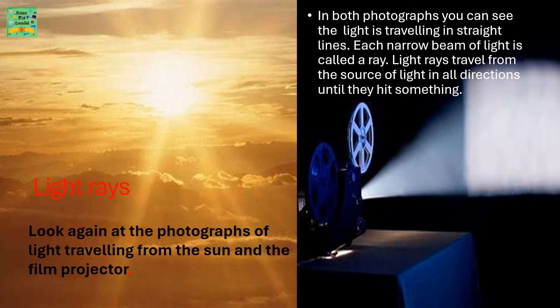The answer is Light Rays. Look again at the photographs of light traveling from the sun and the film projector. In both photographs, you can see the light is traveling in straight lines. Each narrow beam of light is called a ray. Light rays travel from the source of light in all directions until they hit something.